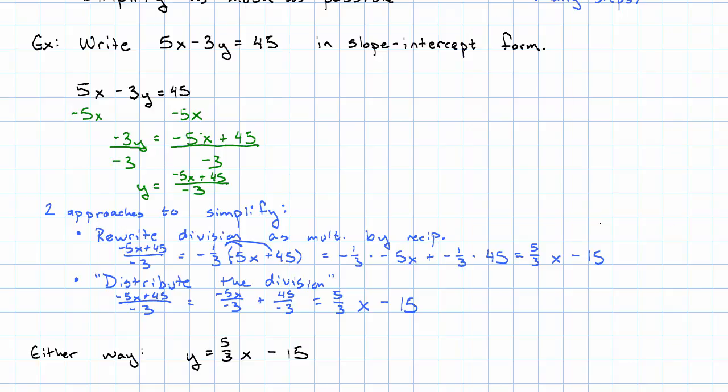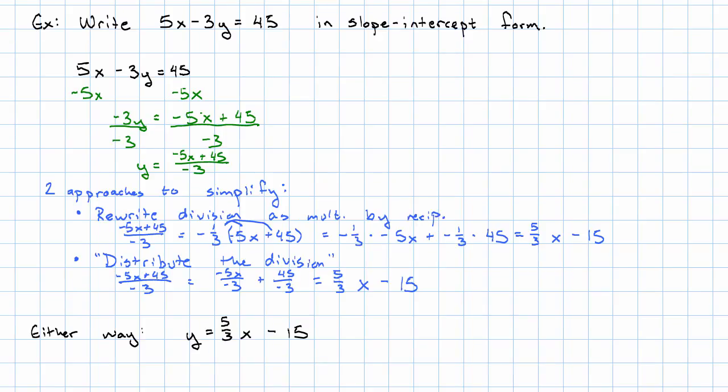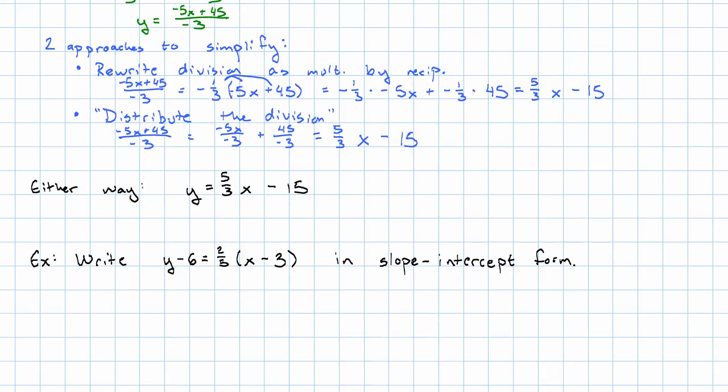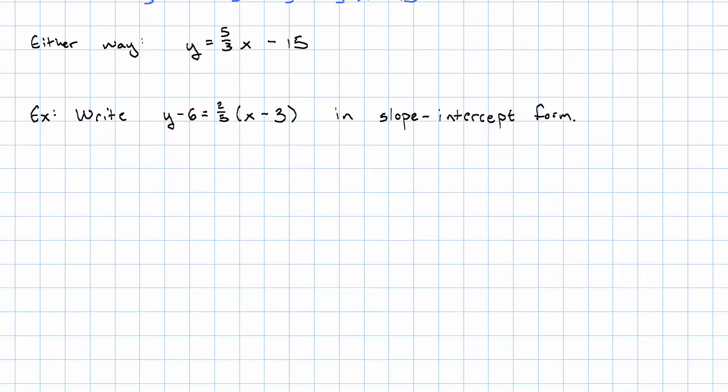OK. So in this example, simplifying was kind of the hardest part. Let's see another example. Suppose we want to write this equation in slope-intercept form. This is in point-slope form right now.